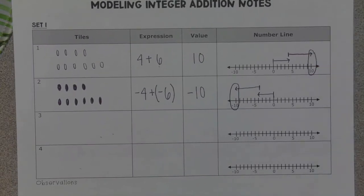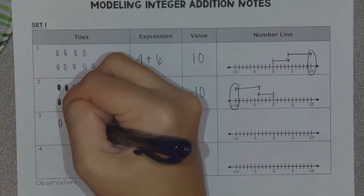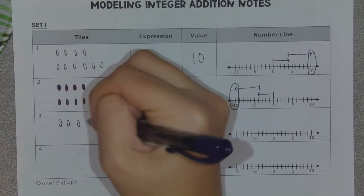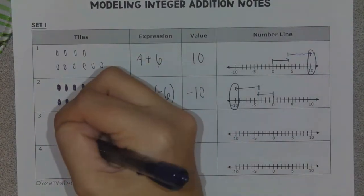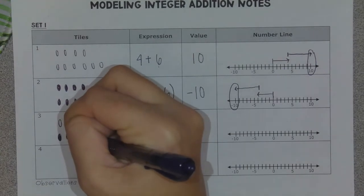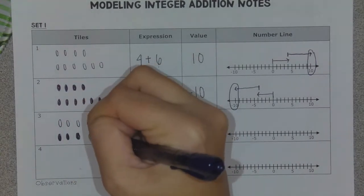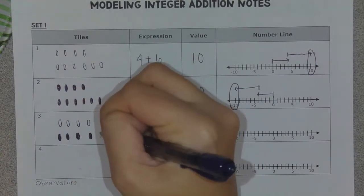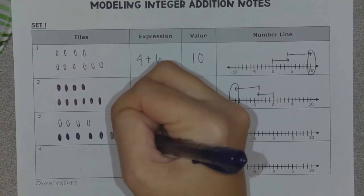For our next one, let's start with four positives. But this time, let's add six negatives. So when I write my expression, I'm still going to start with that first number, which is positive four. But this time I'm adding six negatives to it. Let's use those parentheses to show that that's plus negative six.